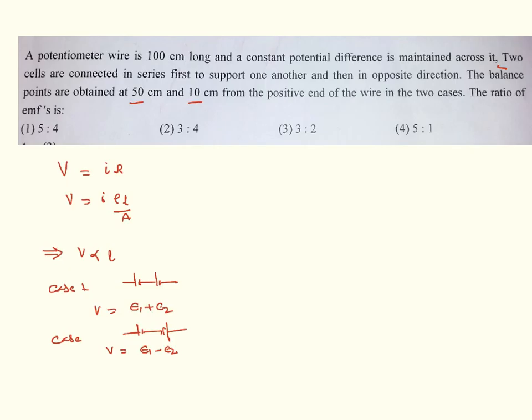Based on the concept that we have learned just now, we can write a formula V1 by V2 equal to L1 by L2. In the first case, because both of them are connected in series in the same order, EMF is added. In the second case, because they were connected in the reverse, EMF is less. L1 is given like 50, L2 is given like 10. That is nothing but equal to 5 is to 1.